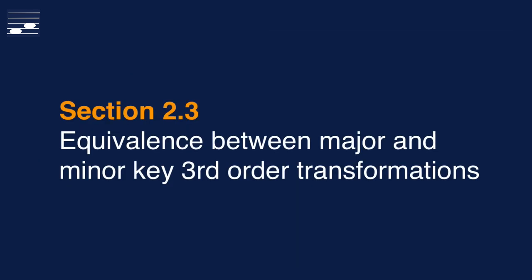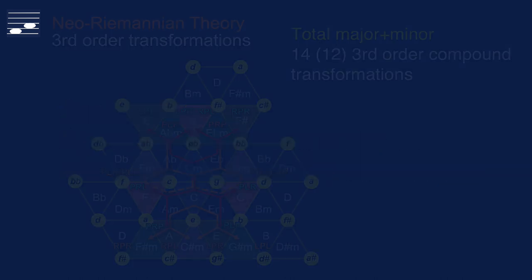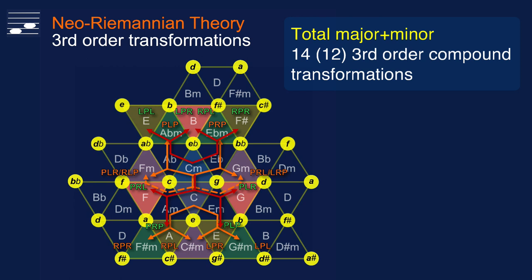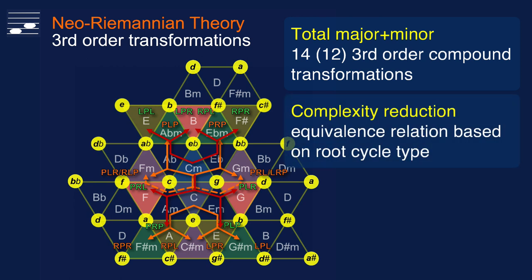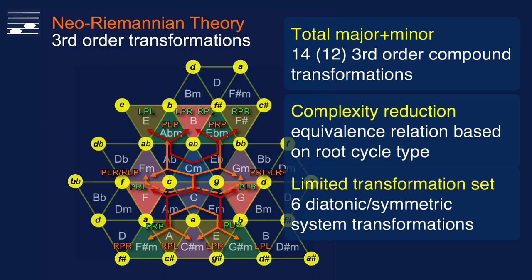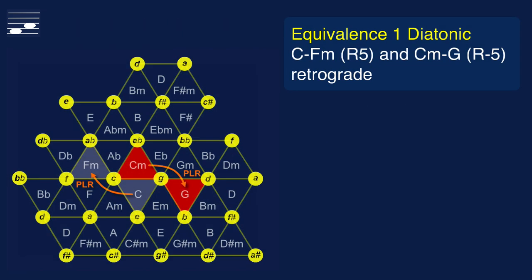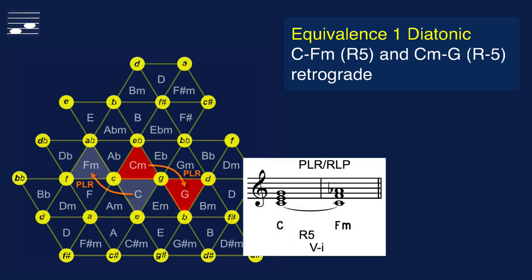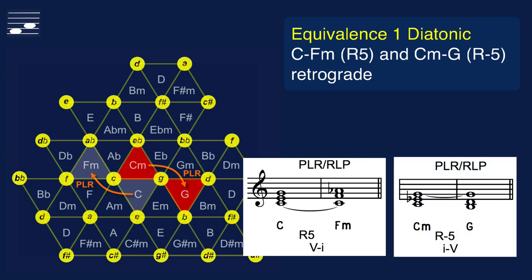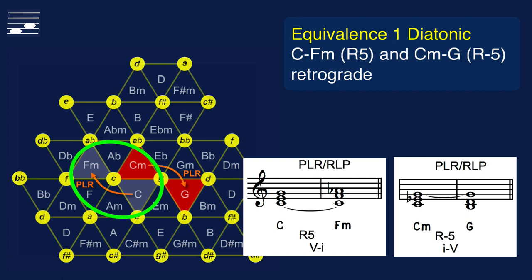The separate treatment of six options in major or minor adds up to 12 transformations total. However, you may reduce the complexity of this set by considering the equivalence between major and minor, looking at the root cycle patterns for the various options. Doing so yields a reduced set of just six transformations. Here we observe the first equivalence: the PLR transformation in major corresponds to diatonic R5, landing on F minor; while in minor the same transformation leads to G major at diatonic root cycle R-5. The retrograde of this operation is the transposed version of the major pattern, and therefore these are equivalent.